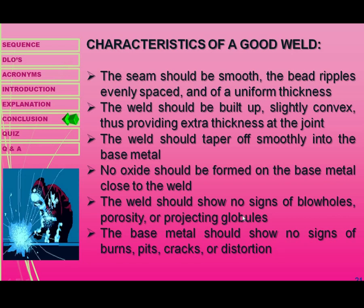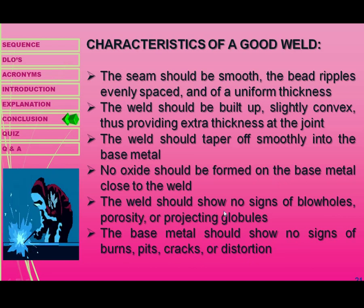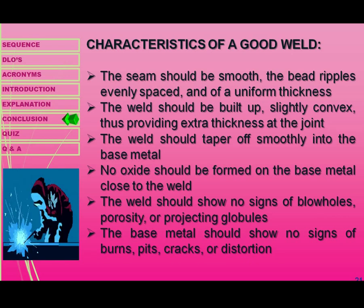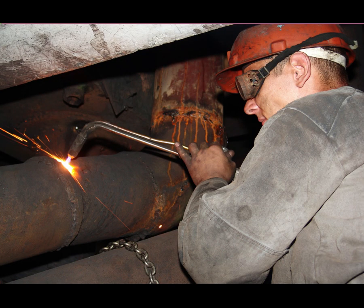The characteristics of a good weld are as follows: the seam should be smooth, the bead ripples evenly spaced and of uniform thickness. The weld should be built up slightly convex, providing extra thickness at the joint. The weld should taper off smoothly into the base metal. No oxide should be formed on the base metals close to the weld. The weld should show no signs of blowholes, porosity, or projecting globs, and the base metal should show no signs of burns, cracks, or distortion.